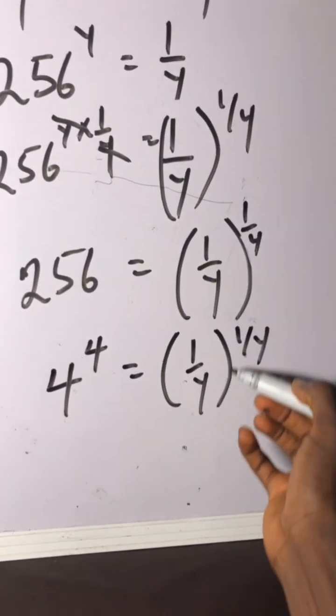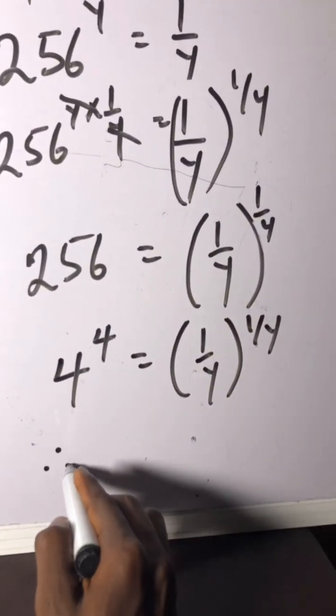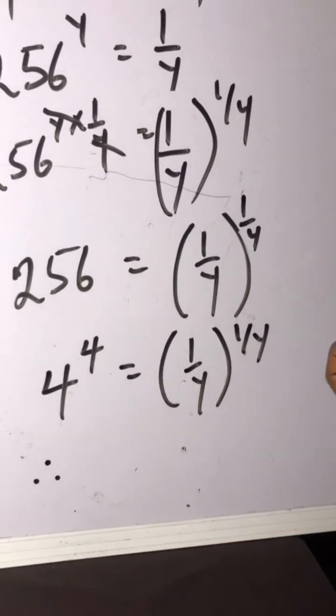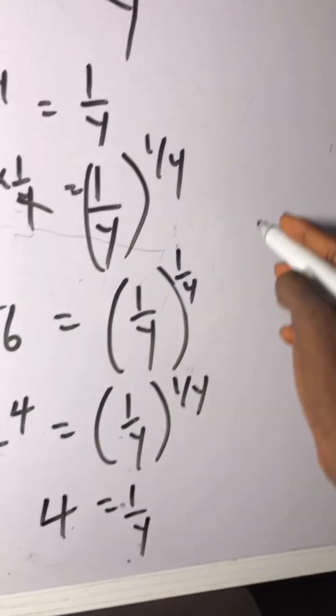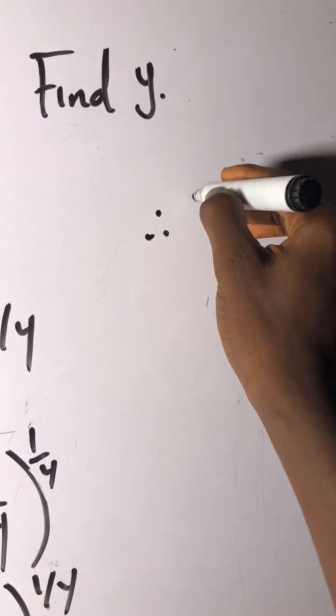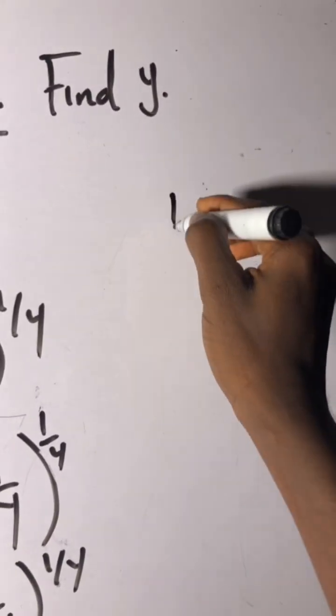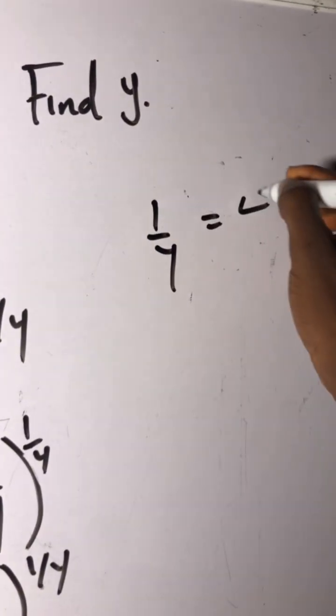So we say therefore equate the bases or the powers. So we say 4 equals 1 over y. Therefore, 1 over y still the same as 1 over y equals 4.